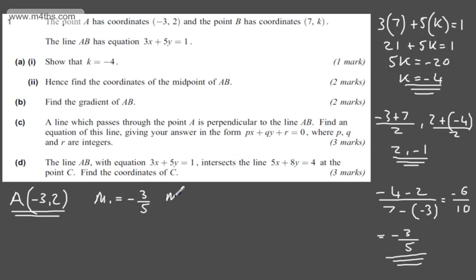It's the negative reciprocal. M1 multiplied by M2 will equal -1 if perpendicular. So all I'm going to do is take this gradient, take the point, and substitute it into the equation of a straight line.